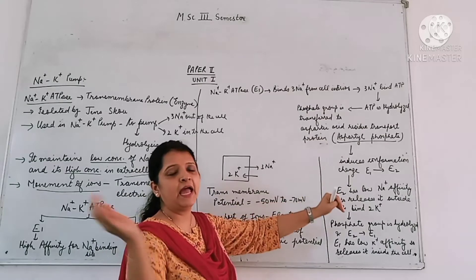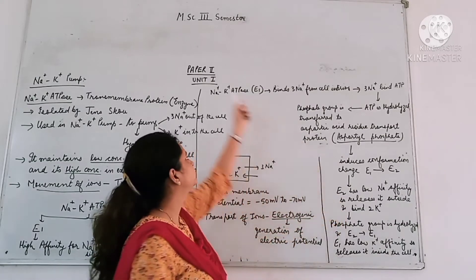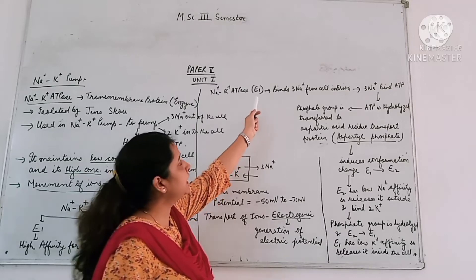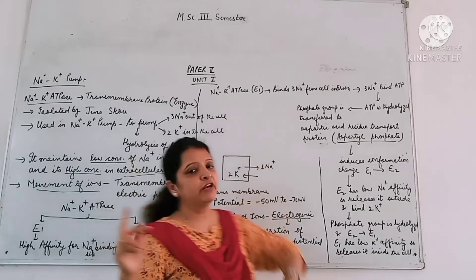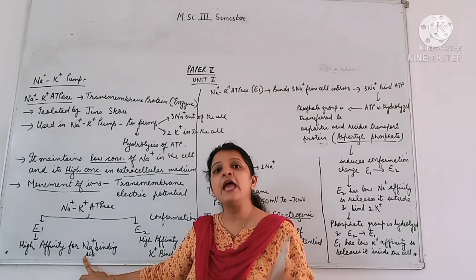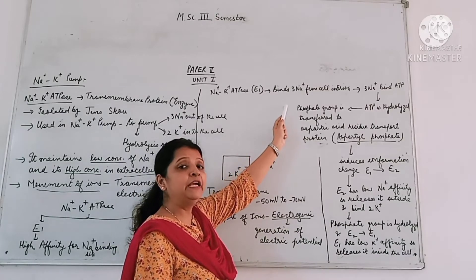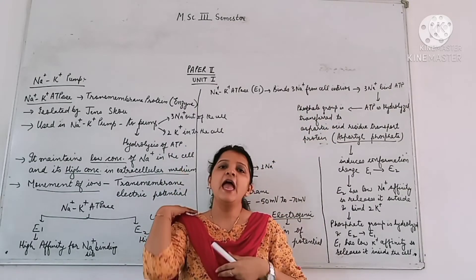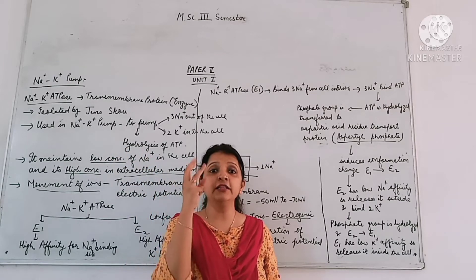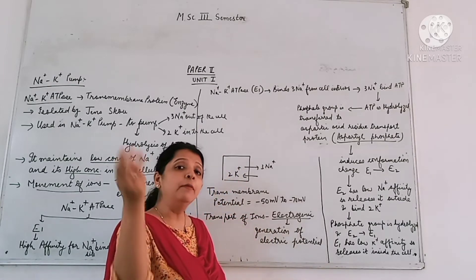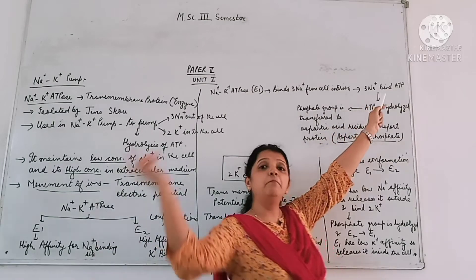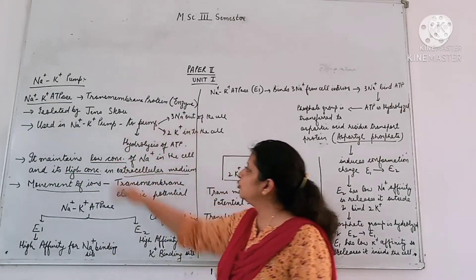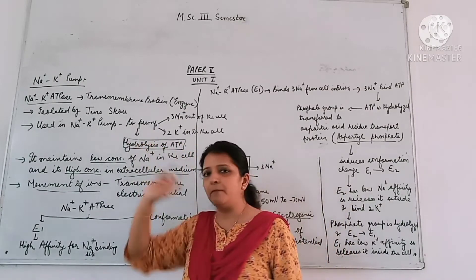First, the Na+ K+ ATPase is present in the cell membrane in its E1 conformation. We have studied that E1 conformation has high affinity for Na+ ions. So it will bind with 3 Na+ ions from the cell interior. In turn, these 3 Na+ ions bound to the enzyme will interact with ATP. This entire pumping process takes place by the hydrolysis of intracellular ATP.